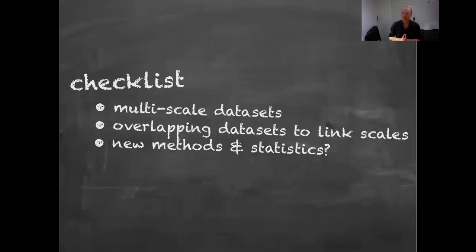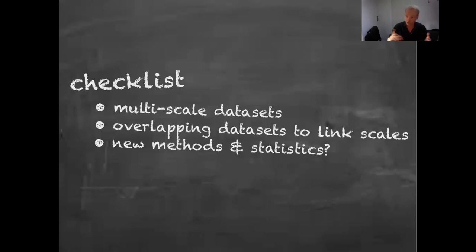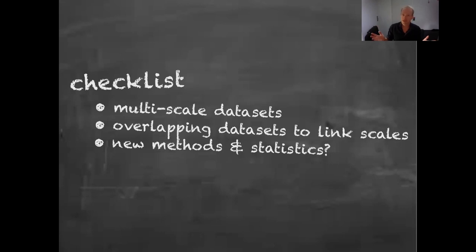What do we need for multi-scale neuroscience — or multi-scale psychiatry, which I'll discuss later? First, we need multi-scale datasets. We need data that tells us something about multiple scales, ideally with measurements of multiple scales in the same individuals so we can find cross-relationships. Second, since no single dataset has information from the same individuals across all levels, we need overlapping datasets that we can stitch together to get a bigger picture.